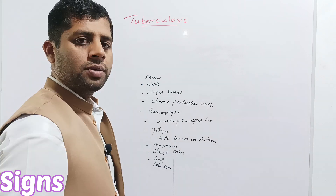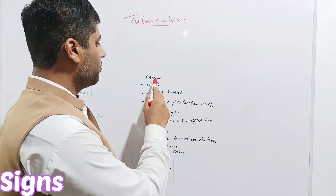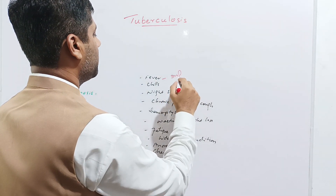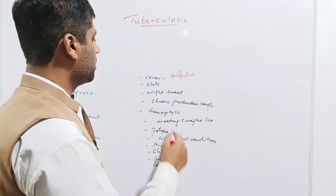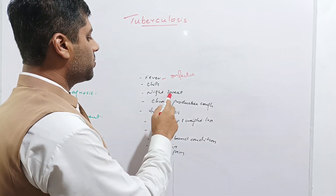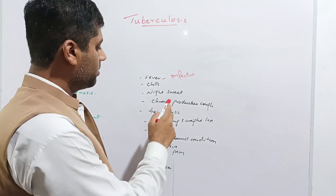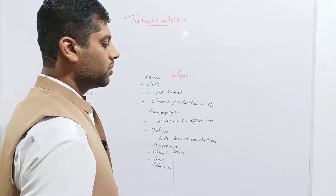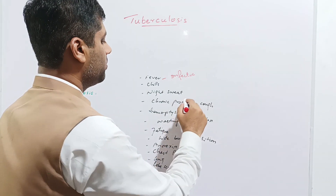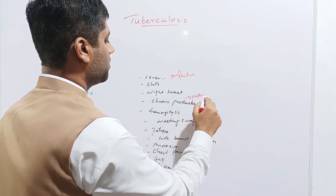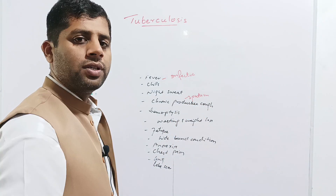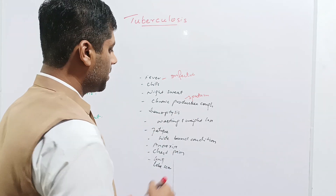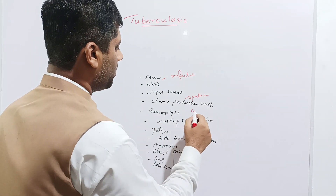The clinical signs of tuberculosis include: fever due to infection, as it is caused by bacteria; chills and night sweats due to fever; chronic productive cough, meaning sputum is released. In some cases, hemoptysis may also occur — hemoptysis means coughing up blood.